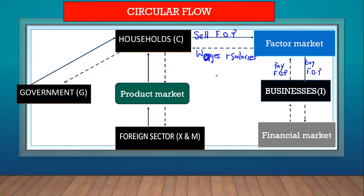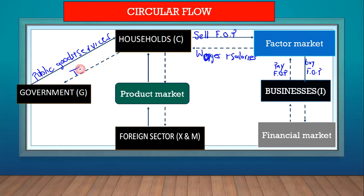Let's look at another interaction: between government and households. The real flow is that the government provides us with public goods and services — things like water and electricity, for example. In return, there is a money flow from households to the government: we pay taxes, and taxes are money.